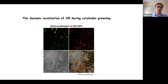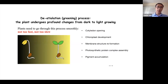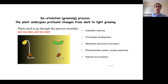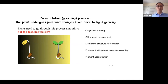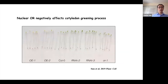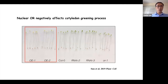We find that OR protein shows dynamic localization during the de-etiolation process. We find the dual localization of OR-GFP in both nucleus and chloroplasts. The greening process, also called the de-etiolation process, is the most important process after plant seed germination. The plant seedling undergoes significant changes from dark to light, including the cotyledons starting to open, chloroplasts beginning to develop, membrane structures inside chloroplasts beginning to reform, photosynthetic protein complexes beginning to assemble, and photosynthetic pigments starting to accumulate. Plants need to go through this process smoothly — it shouldn't be too fast or too slow, otherwise the young plant seedling will be damaged. We find that overexpression of OR and the nuclear accumulation of OR protein can negatively affect the de-etiolation process, causing a delayed greening in Arabidopsis seedling cotyledons.